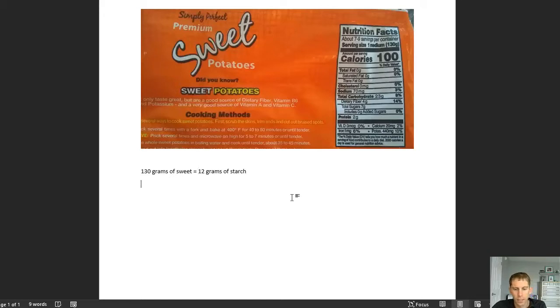Let's say theoretically in this experiment we were going to use 117 grams of sweet potato. 117 grams is to 130 grams as x grams is to 12 grams. So 117 over 130 equals x over 12. We can solve for x and figure out the number of grams expected.